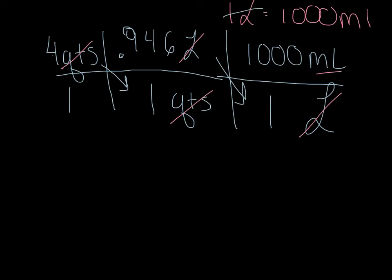Now I just need to do a little bit of math. My top row: 4 times 0.946 times 1,000 is equal to 3,784. My bottom row: 1 times 1 is equal to 1. 3,784 divided by 1 leaves me with 3,784 milliliters.